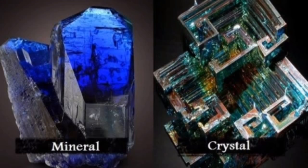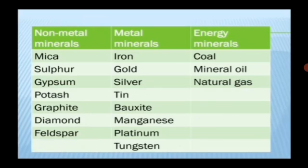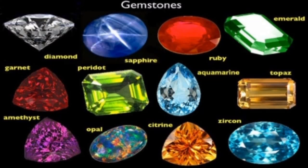A mineral is a naturally occurring inorganic solid that has a crystal structure and a definite chemical composition. Here is the classification of minerals according to their properties: non-metal minerals, metal minerals, energy minerals, and gems and gem-like minerals.